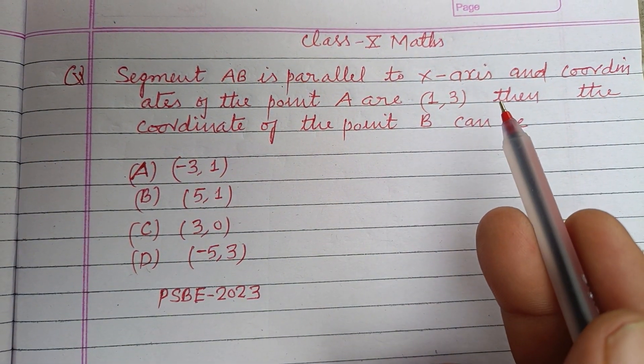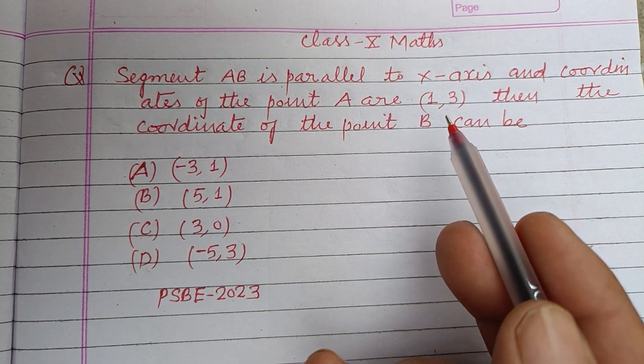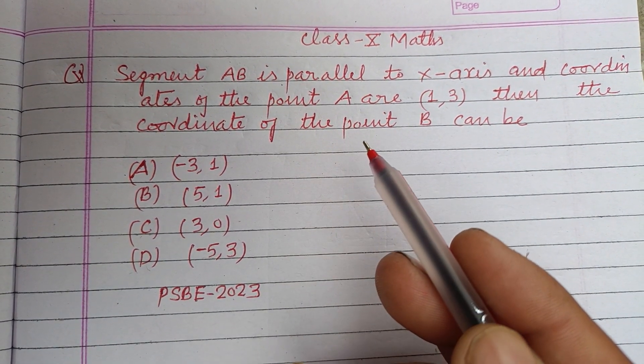Segment AB is parallel to x-axis and coordinates of point A are (1,3). Then the coordinates of point B can be: